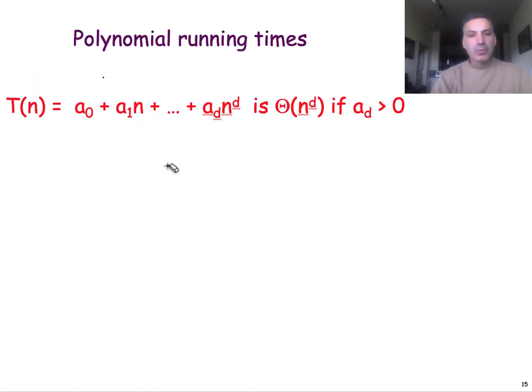Let's start with polynomial running times that can be written as T(n), a polynomial of degree d. The important thing here is that the coefficient of the highest power is positive. The rest of the coefficients may be zero or negative. I want us to see that this polynomial of degree d is big theta of the highest power of n.